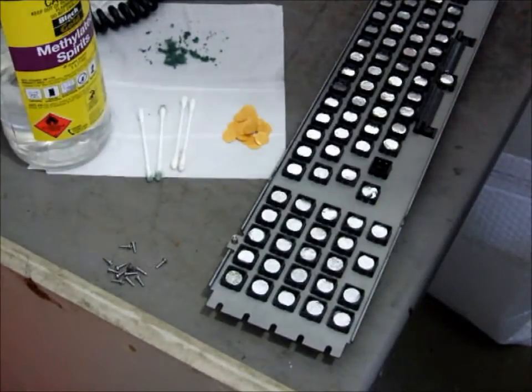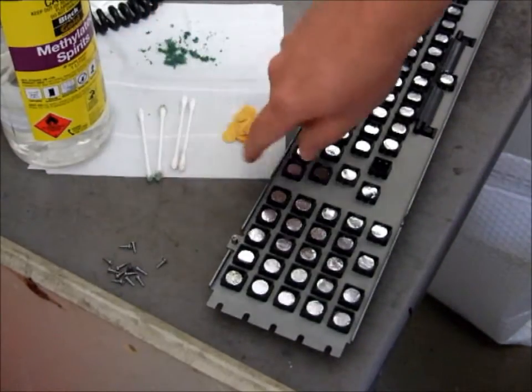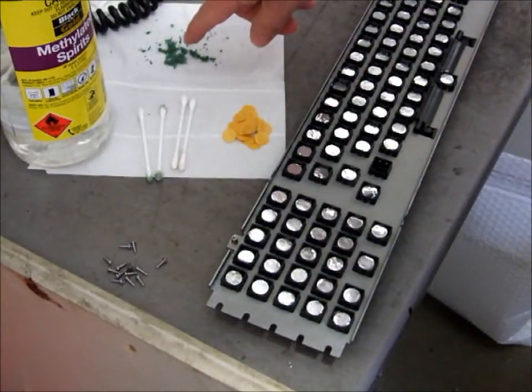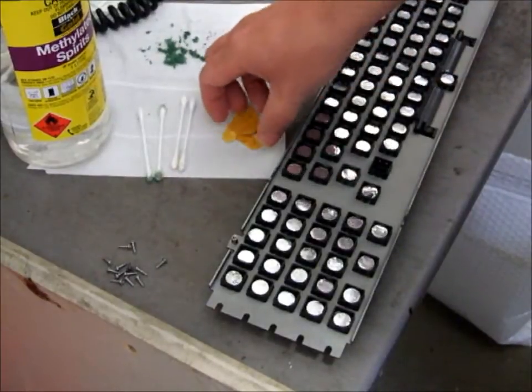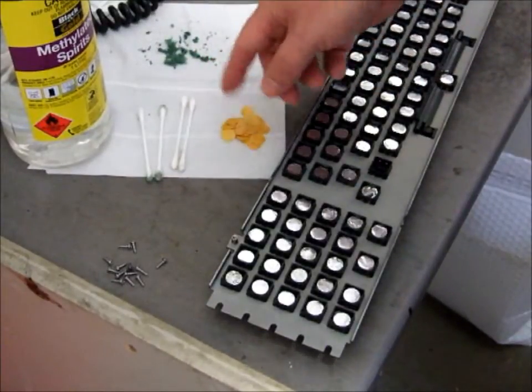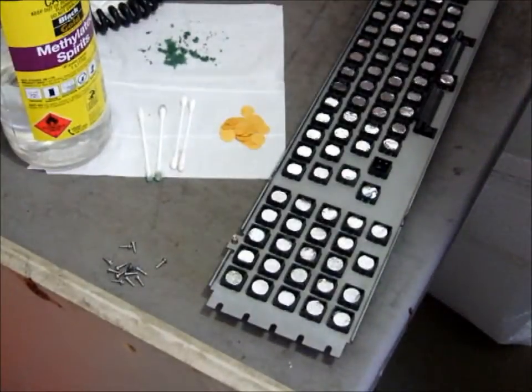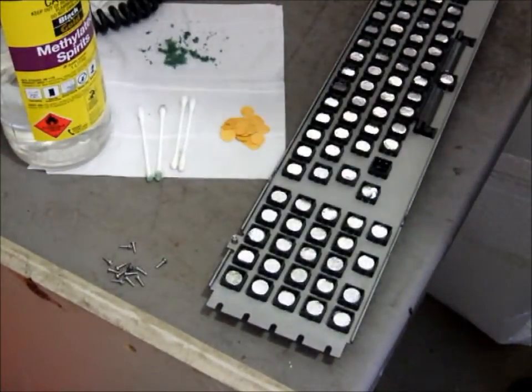What I have on hand is some methylated spirits, some cotton tips, that green stuff is what's left of the old pads that come out, and these are the discs that are left over once you pull them off the new foams.